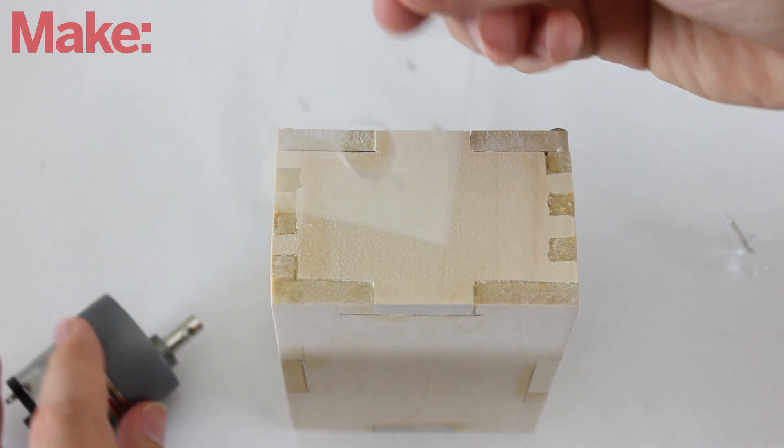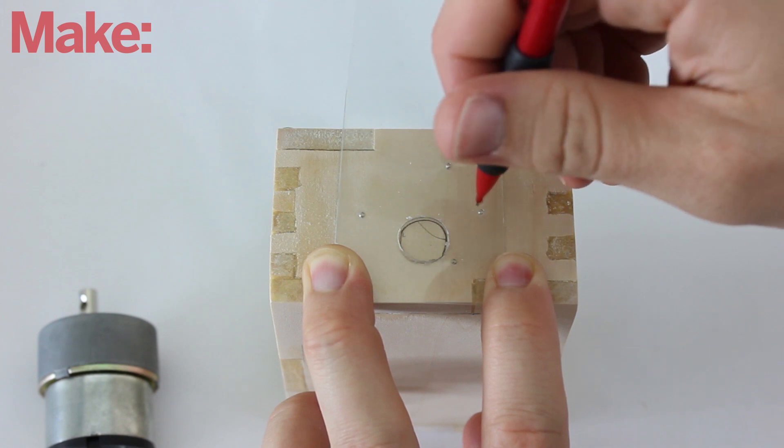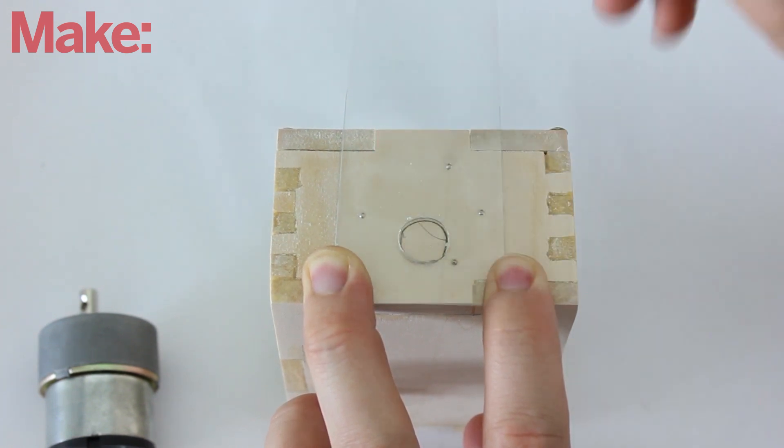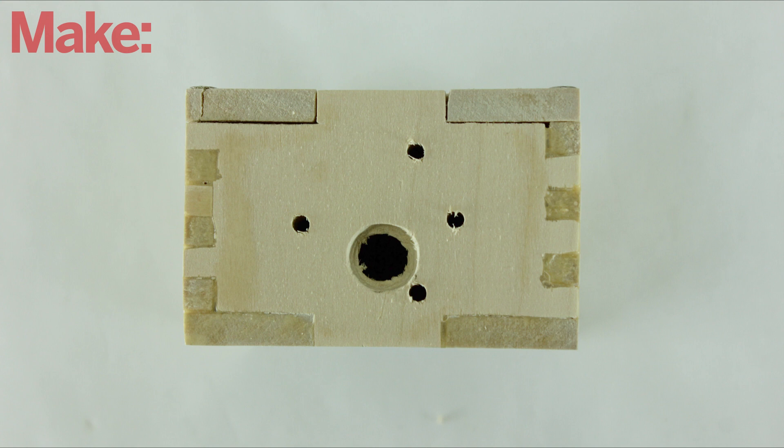Flip it over and put it on the side of the box. You can now use a pencil to trace the hole pattern onto the box. Then just drill a hole in each location.